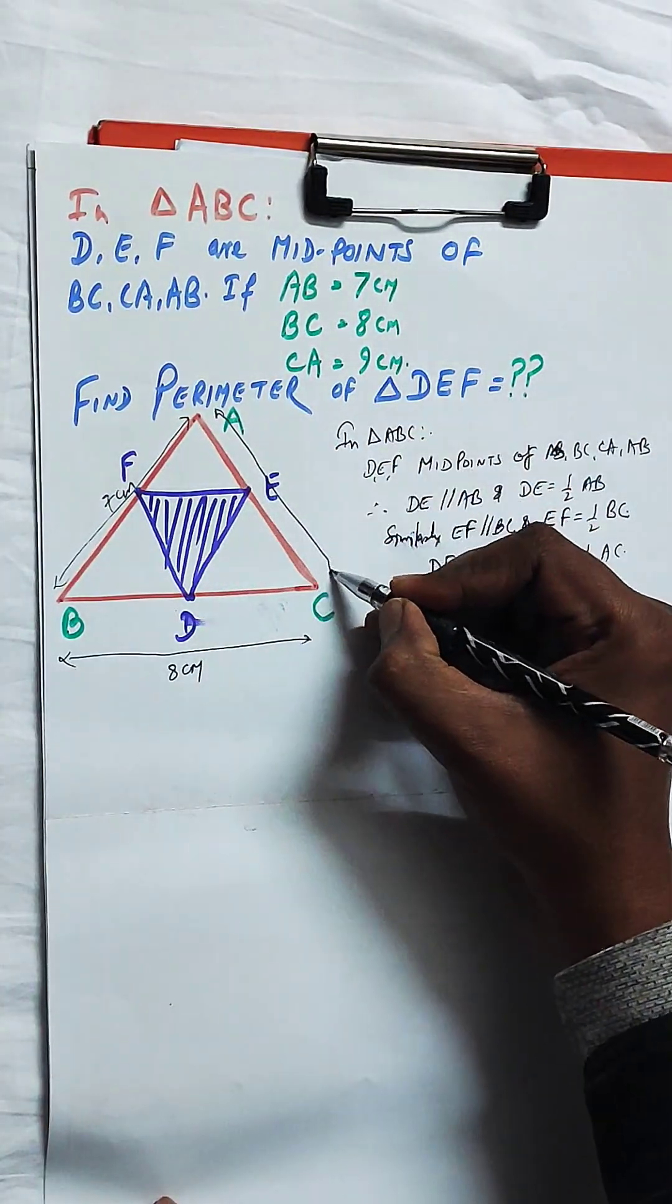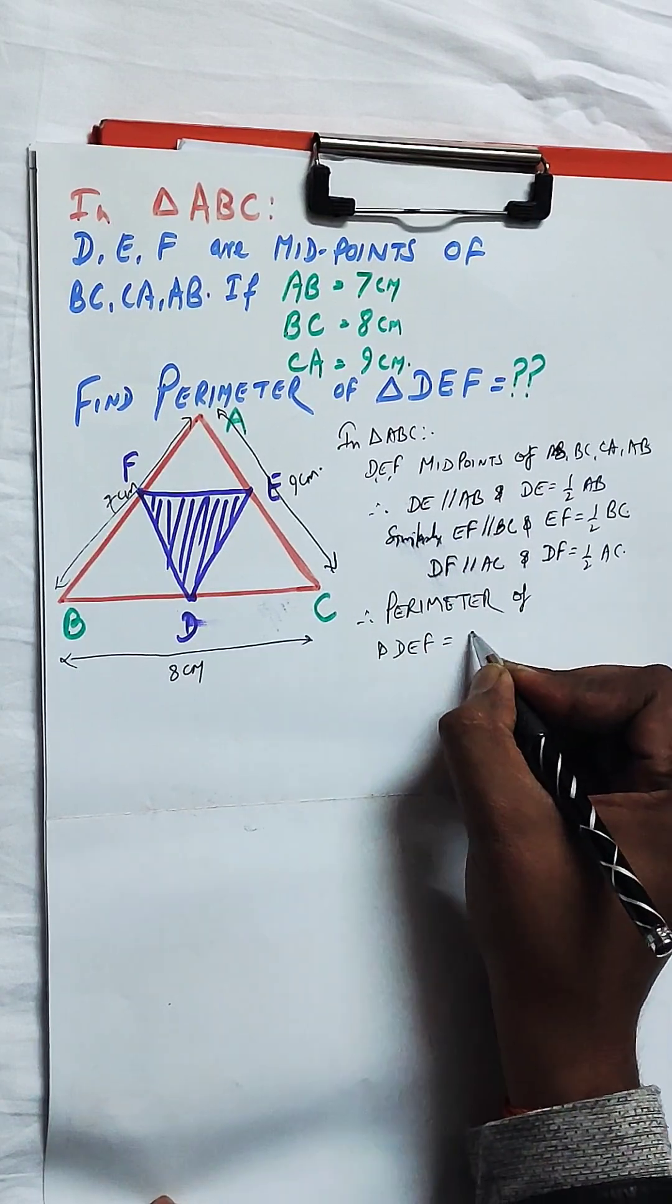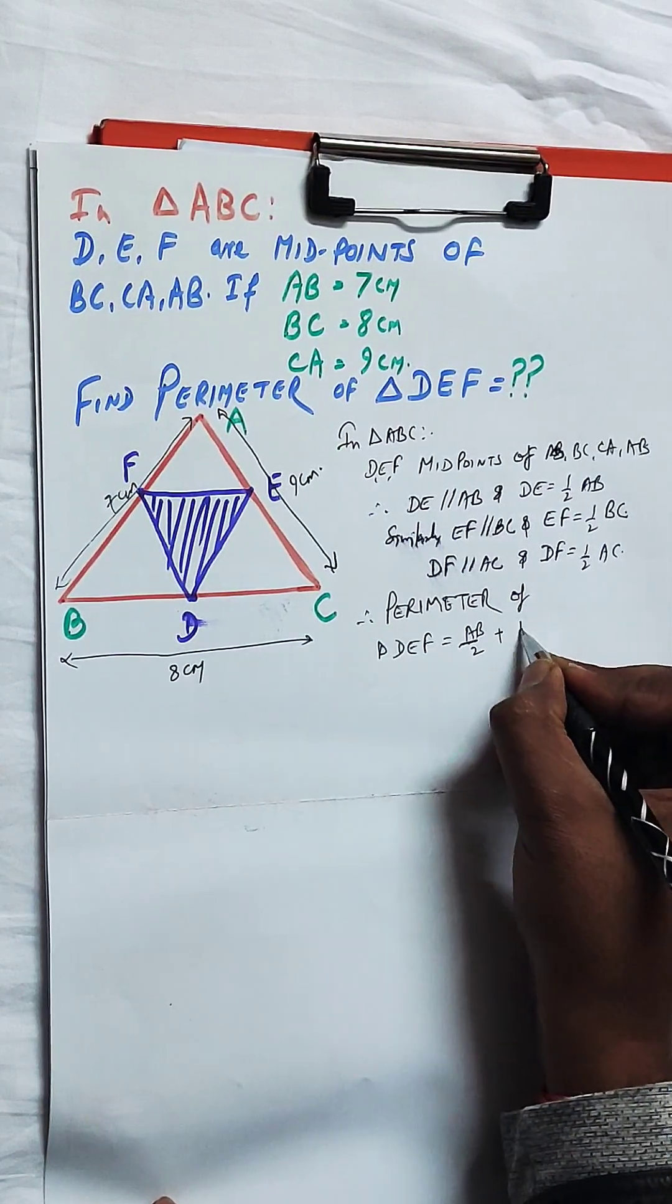Similarly, DF parallel to AC and DF is half of AC.